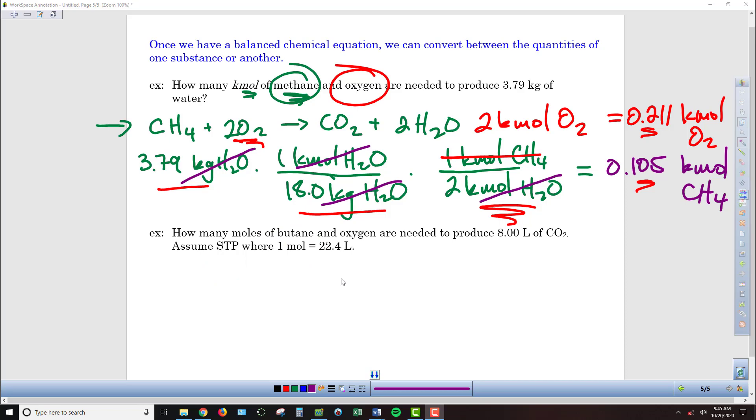And the difference in this case is we're given the number of liters of carbon dioxide we have, and we want to find how many moles of butane and how many moles of oxygen are needed to produce that volume.